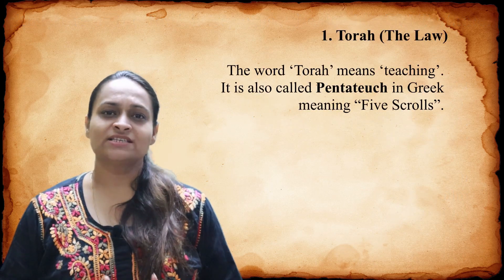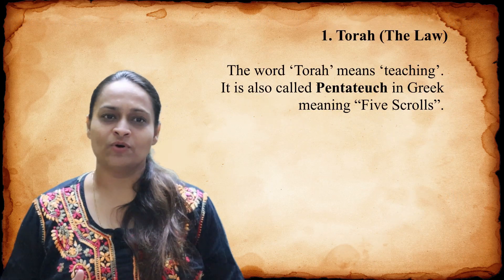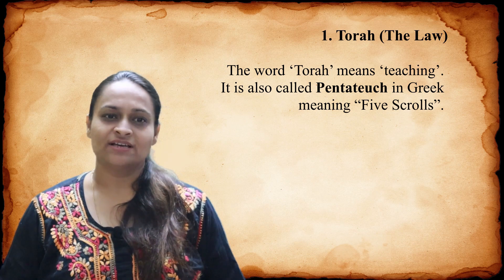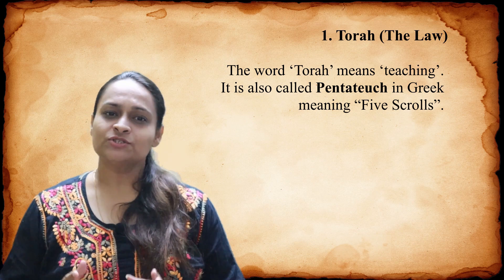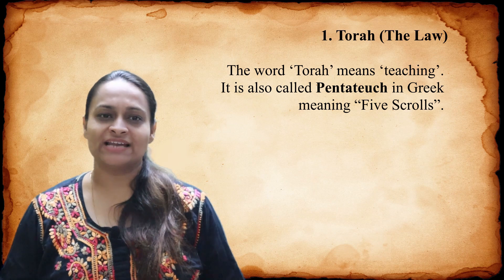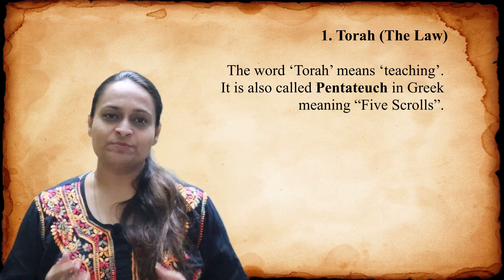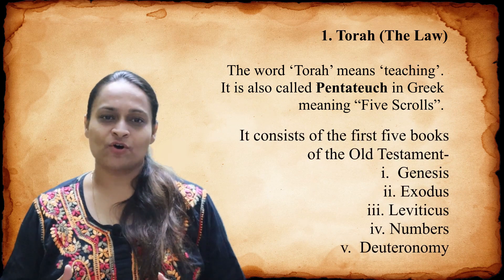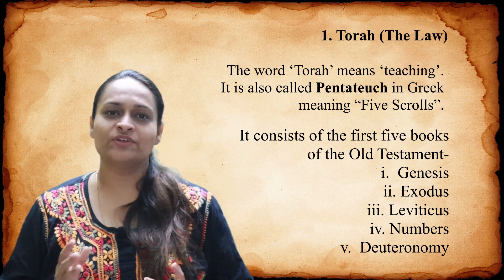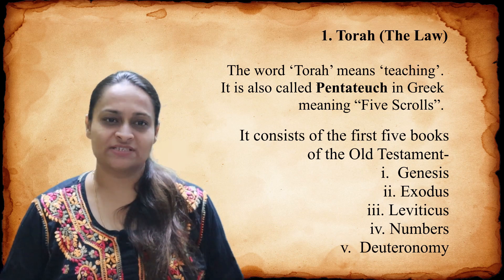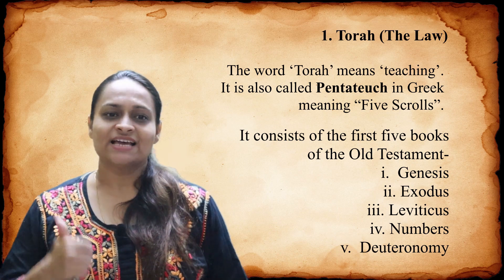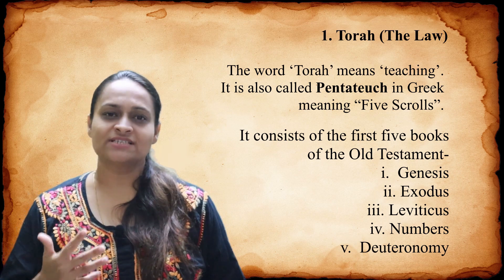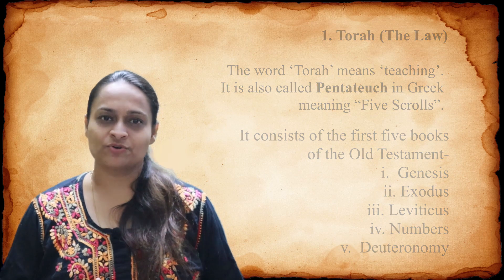Torah is the set of the books of law. The word Torah means teaching. It is also called Pentateuch in the Greek language, which means five scrolls. It consists of the first five books of the Old Testament: Genesis, Exodus, Leviticus, Numbers, and Deuteronomy.